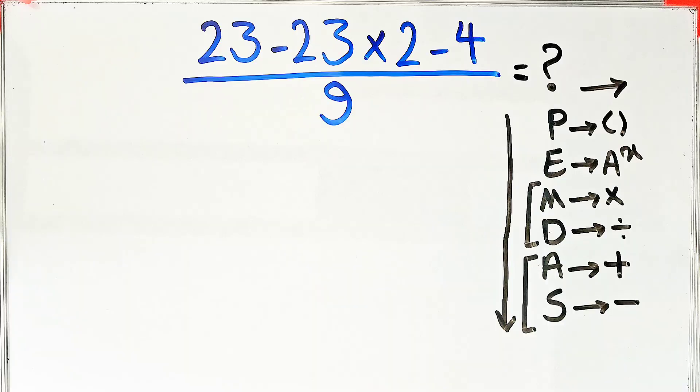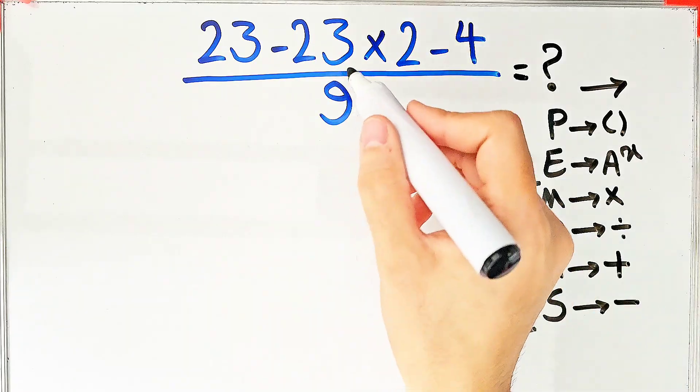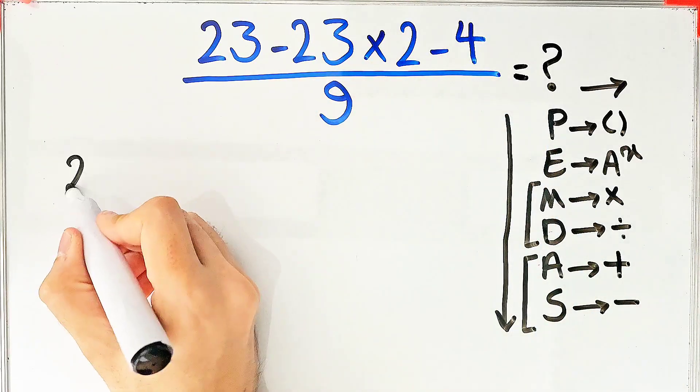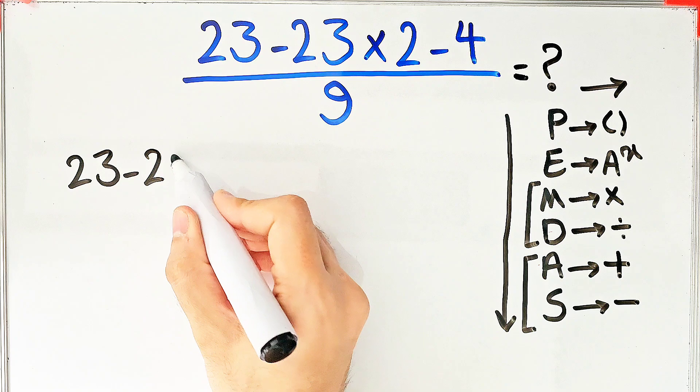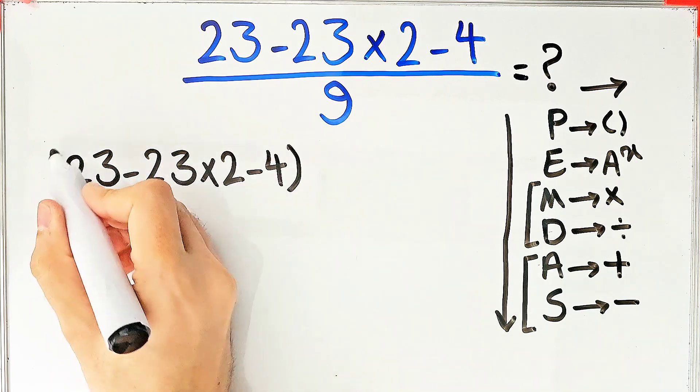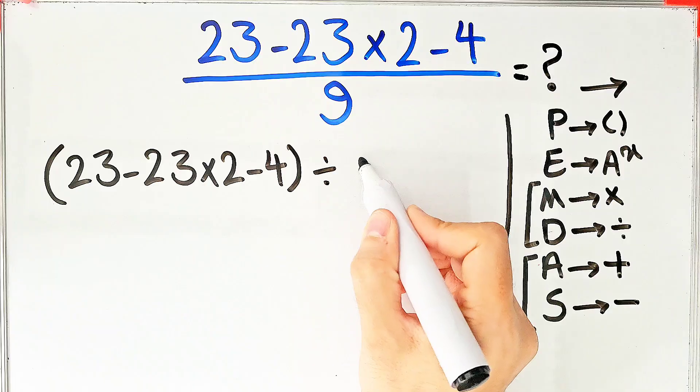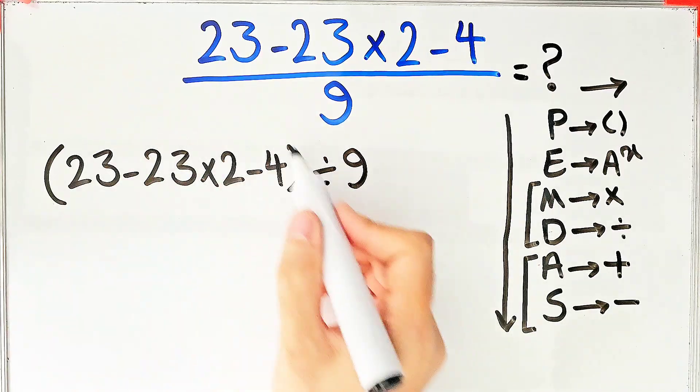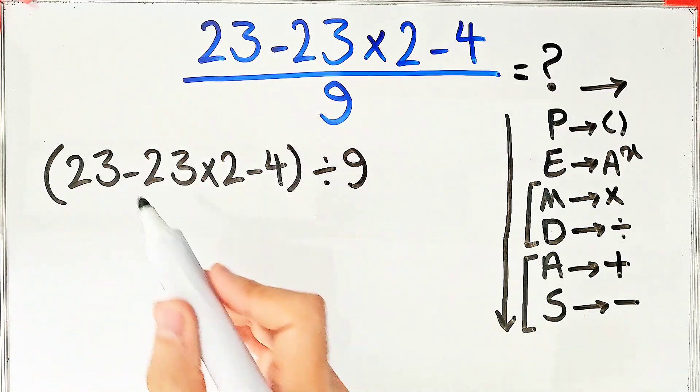Let's simplify this question and solve it step by step together. We have 23 minus 23 times 2 minus 4, then divided by 9. First we simplify the parentheses. Inside the parentheses we have subtraction and multiplication.